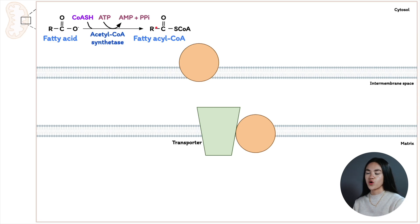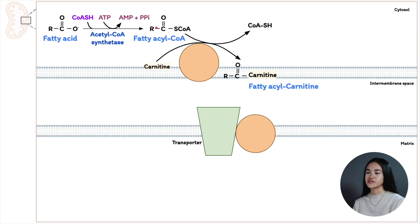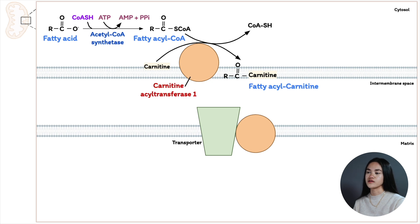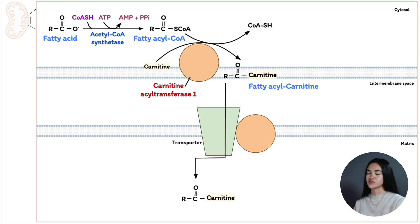In the second step, the CoA is going to be substituted for carnitine to form fatty acyl-carnitine. This is formed in the outer membrane by carnitine acyltransferase 1 (CAT1). Then fatty acyl-carnitine moves into the matrix by passive transport through the acyl-carnitine co-transporter.